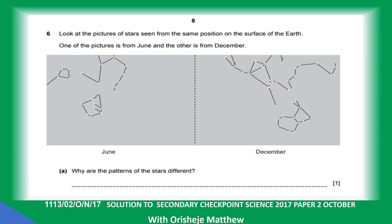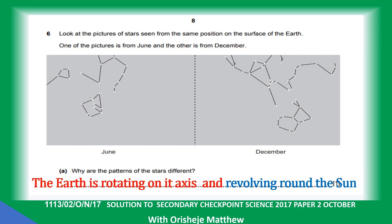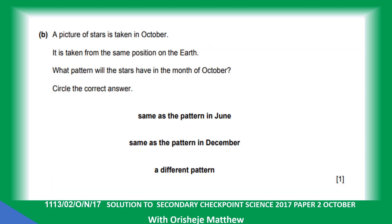Question 6. Look at the picture of the stars seen from the same position on the surface of the Earth. One picture is from June and the other from December. Why are the patterns of the stars different? The Earth is rotating on its axis and revolving around the sun — simply put, the Earth is moving. A picture taken in October from the same position will have a different pattern because the position of the Earth is different in October compared to June and December.